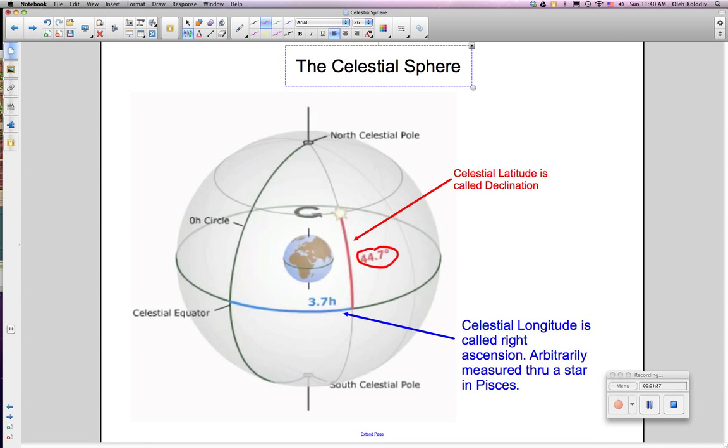Celestial latitude is called declination, which can be positive or negative, or north or south of the celestial equator.